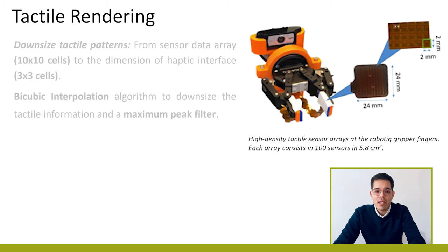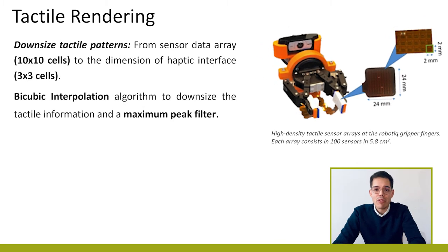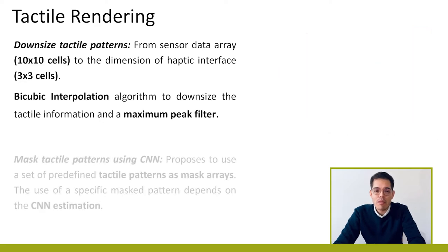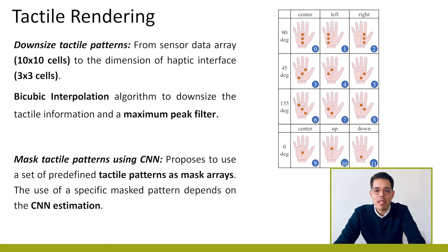In the first stage, the downsize method resizes and adapts the sensor's data array to the dimensions of the haptic display with a unique stimulation point per row. The second stage proposes to use a set of predefined tactile patterns as mask arrays, whose use depends on the CNN estimation.